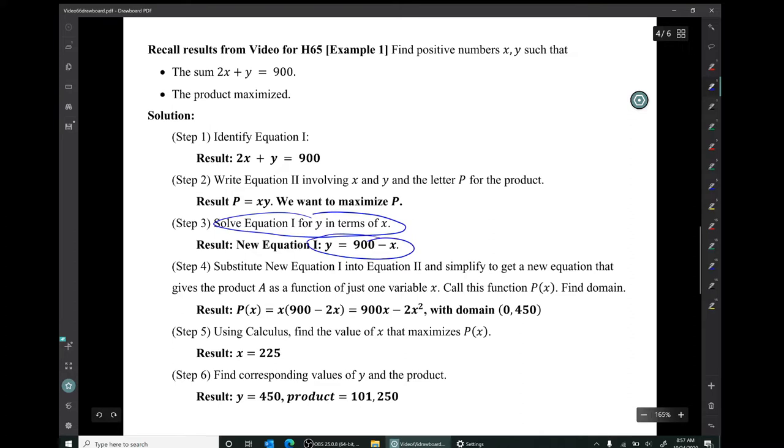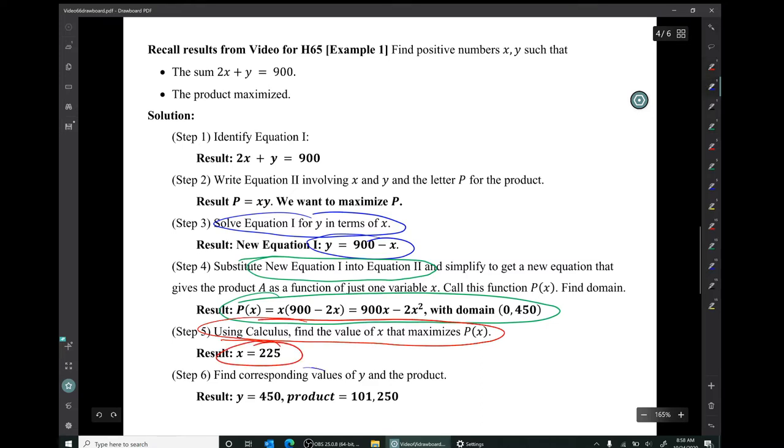So our method was we solved equation one for y in terms of x, and we got this, and then we substituted equation one into equation two and simplified to get a function p(x). And we figured out its domain. And then using calculus, we found the value of x that maximizes p(x). We got that value. And then finally, we found the corresponding values of y and the product.